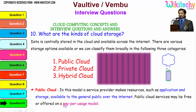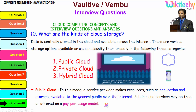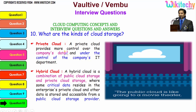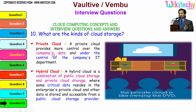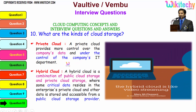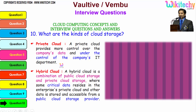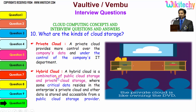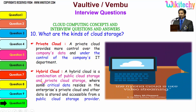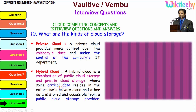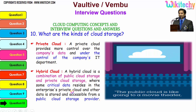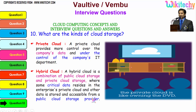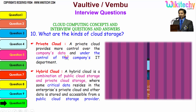Public cloud services may be free or offered on a pay-per-usage model. Private cloud provides more control over the company's data and is under the control of the company's IT department. Hybrid cloud is a combination of public and private cloud storage — critical data resides in the enterprise private cloud while other data is stored and accessible from a public cloud provider.